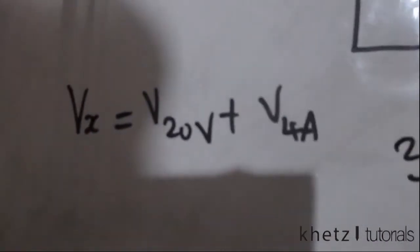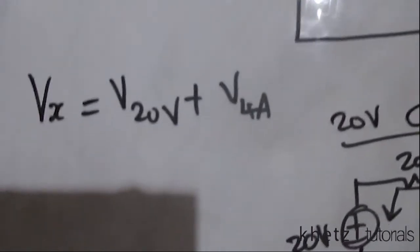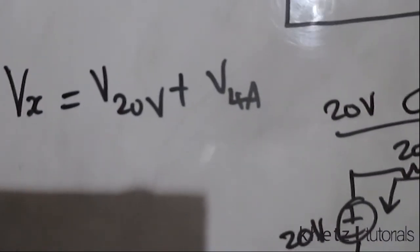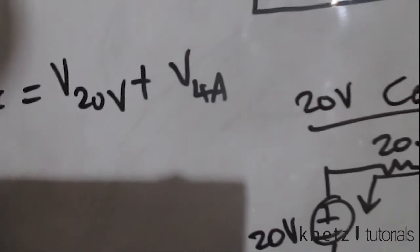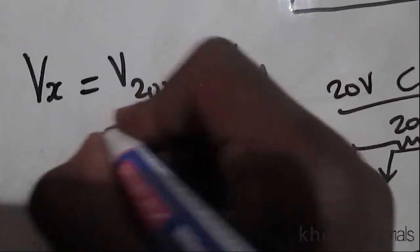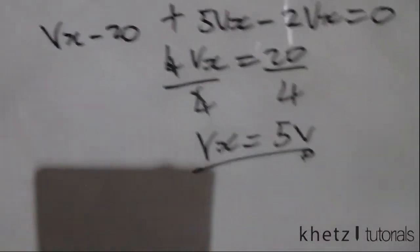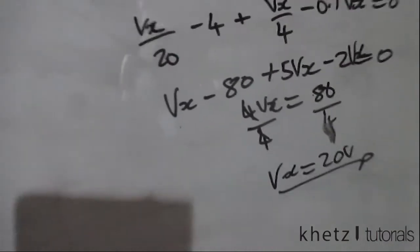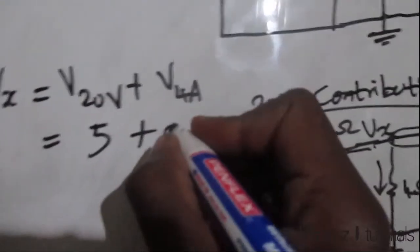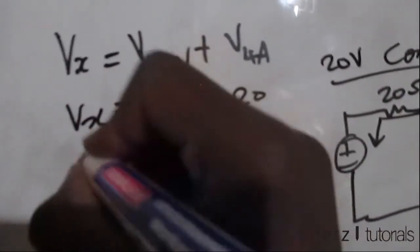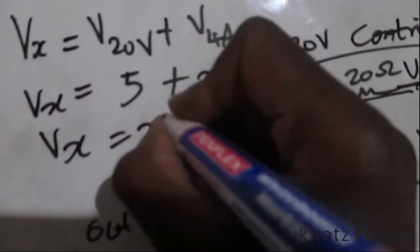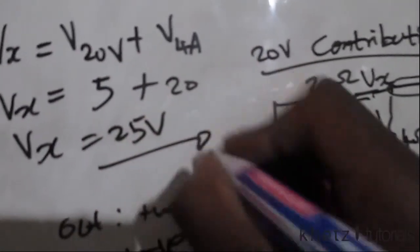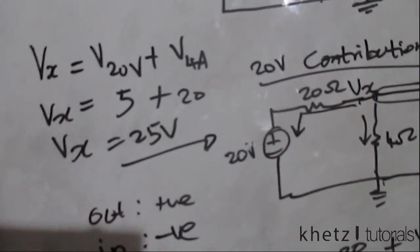Finally, using superposition, Vx is the algebraic sum of the contributions of the 20-volt and 4-ampere sources. The contribution of the 20-volt source is 5 volts and the contribution of the 4-ampere source is 20 volts. Adding those two together gives a final value of Vx = 25 volts.